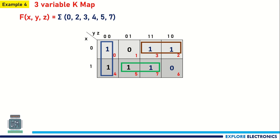Looking at the first group: X is changing, so X can be neglected. This gives Ȳ·Z̄ from these two cells. Looking at the second group: X is 0, so it is X̄. Y is not changing and Z is changing, so it is Y. This second group gives X̄Y. Similarly for the third group: X is equal to 1, so we have X. From Y and Z values 0,1,1,1 — where Z is 1, Y is changing. So from this group we get X·Z.